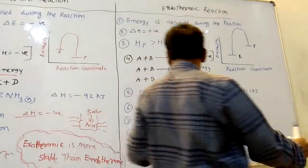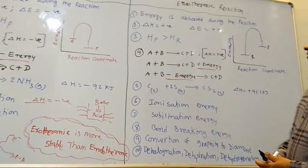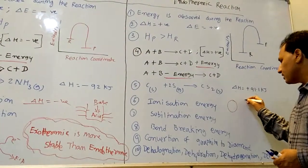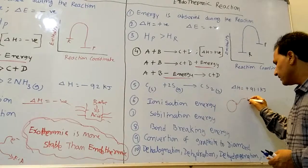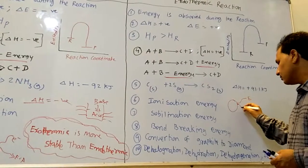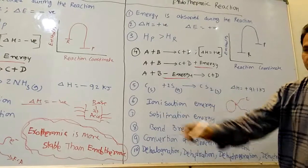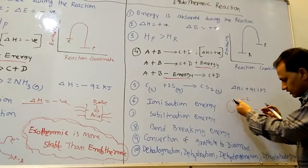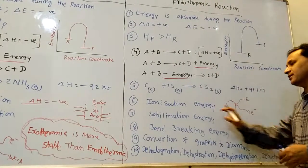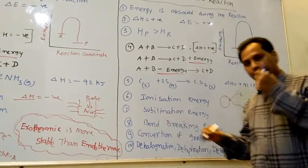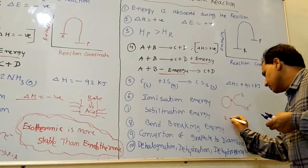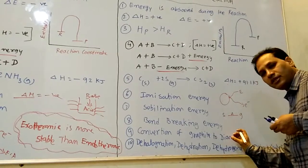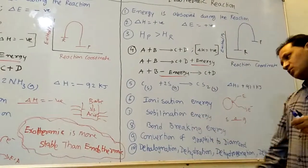What are endothermic reactions? Ionization energy means the amount of energy supplied to remove an electron — the reverse of electron affinity. Energy is supplied to the system and the atom releases the electron — so ionization energy involves absorbing energy, making it endothermic. Sublimation means solids directly converting to gas by absorbing heat.